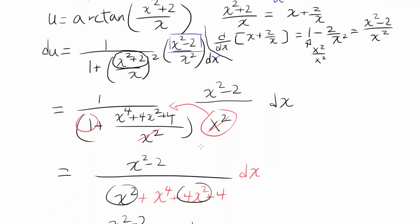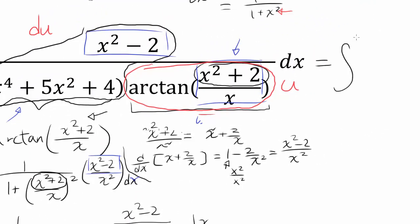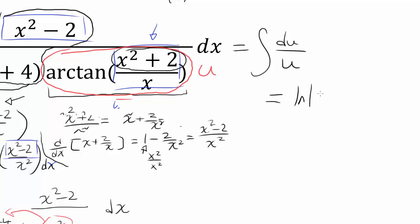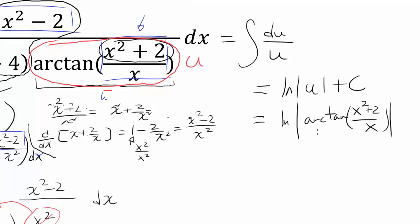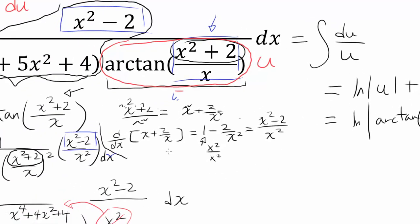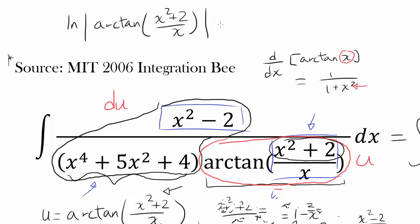We have the integral — all of this craziness simplifies to du over u — and you can integrate this instantaneously. That's the natural log of the absolute value of u plus C. And our u was arctangent of (x squared plus 2) over x, plus C for the constant of integration. So the solution to this crazy indefinite integral is simply ln|arctan((x² + 2)/x)| + C.